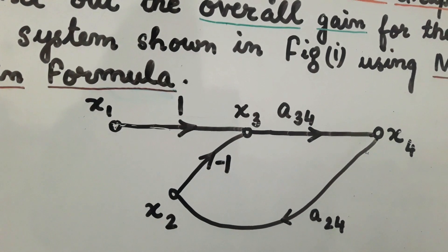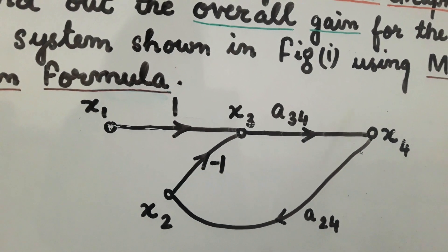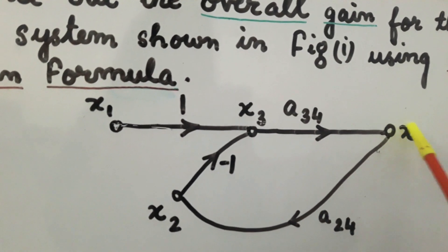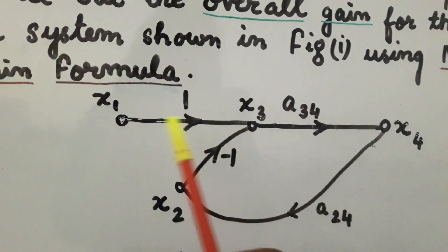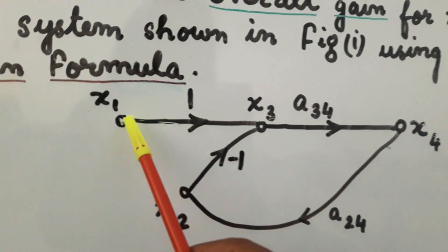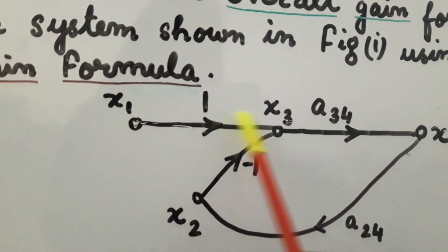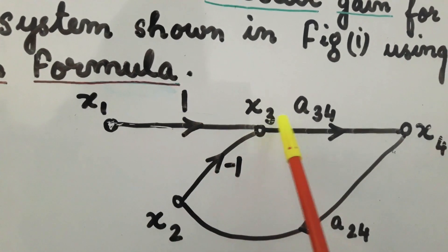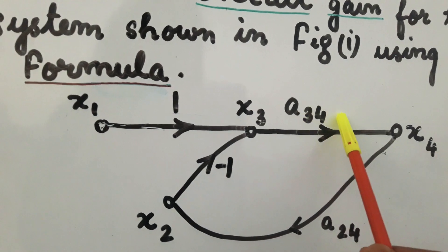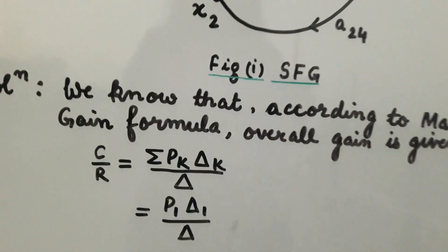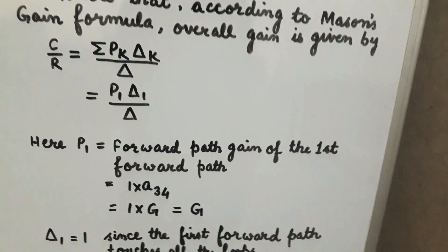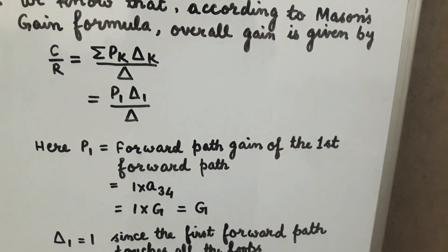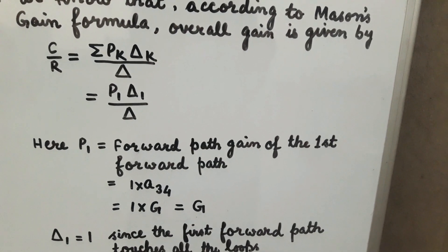Since there is only one forward path, the numerator will have only the term p1·delta1. The value of p1 equals the gain of this path: the gain from x1 to x3 is 1, and the gain from x3 to x4 is a34. So p1 = 1 × a34. Since a34 = g, we get p1 = g.